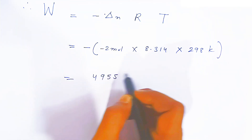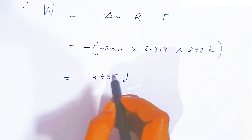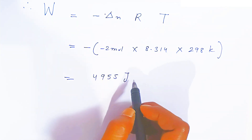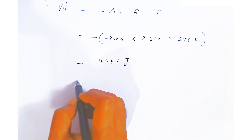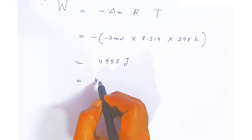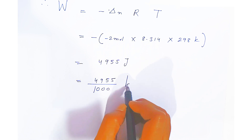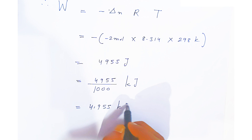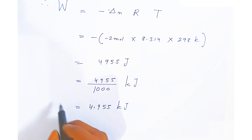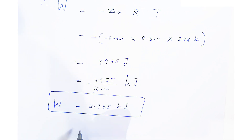Multiplying out: W = +4955 joules. To convert to kilojoules, divide by 1000, giving W = +4.955 kilojoules.